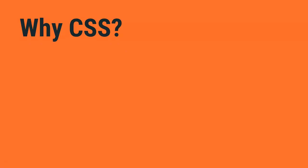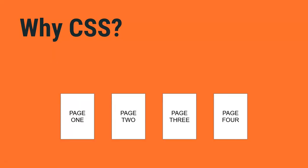But why a whole other language? Why CSS? Why not do it all in HTML? Well, if HTML was used to style the pages, each individual page would have to have the same chunk of markup for that style in it. But what happens if you want to update your site — if you change the colors or the font? Say I want to make the page blue. If I was just using HTML, I'd have to go through and make the same change to each page, repeating the same work again and again.